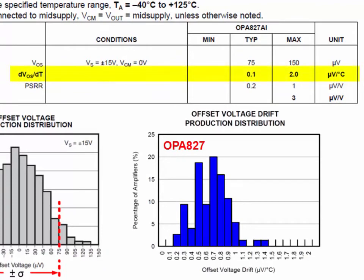We also have a VOS drift specification measured in microvolts per degree C, describing how VOS changes with temperature. In this case, the typical drift is given as 0.1 microvolts per degree C, and the maximum drift is given as 2 microvolts per degree C.